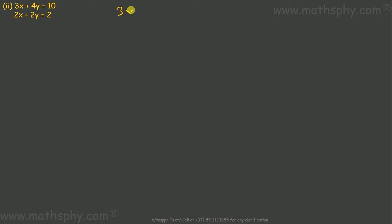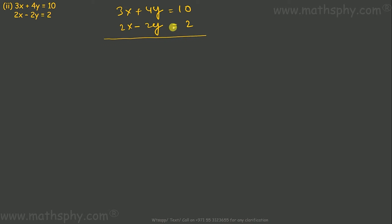The second one: 3x plus 4y equals to 10 and 2x minus 2y equals to 2. Let's try to cancel y. We have 4y and negative 2y. If I multiply the second equation by negative 2, this gives positive 4y, and then 4y can be cancelled with 4y.